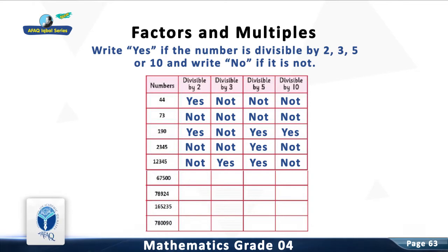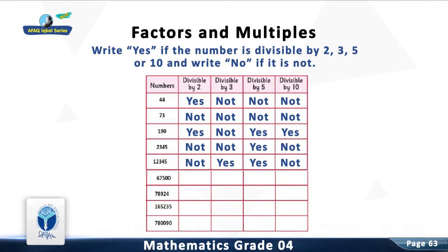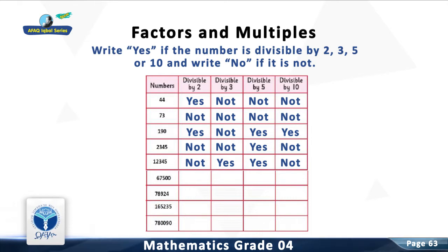Question 5: Check divisibility of the number by 2, 3, 5, and 10. You are right. It is not divisible by 2. It is divisible by 3. It is divisible by 5. It is not divisible by 10.